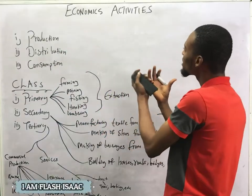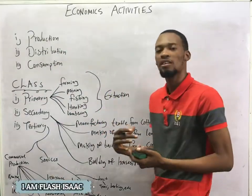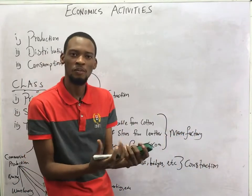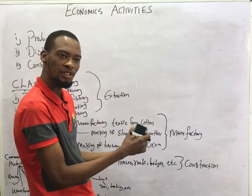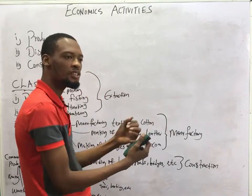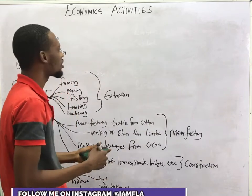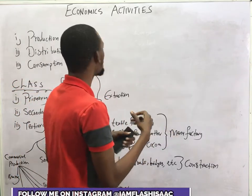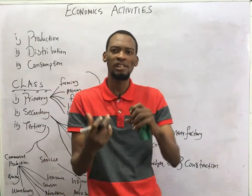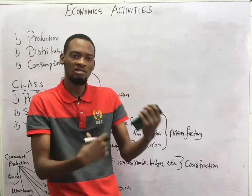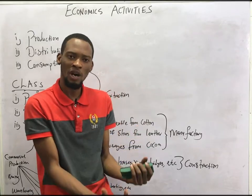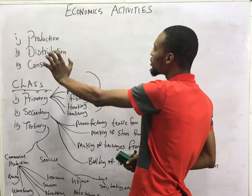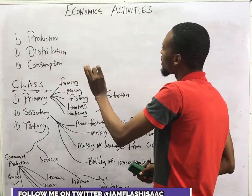Today, I will be taking you through economics activities. Recall that economics is a branch of knowledge which deals with production, consumption, and creation of wealth. From the word economics and its definition, we certainly know that the activities are around production and satisfying human wants. So the economic activities are basically production, distribution, and consumption.